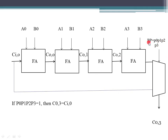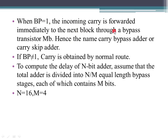If BP equals 1, the input carry is forwarded immediately to the next block through the multiplexer — hence the name Carry Bypass, also known as Carry Skip. When BP equals 0, the carry takes the normal route through the adder stages.